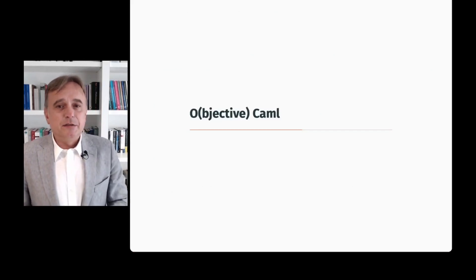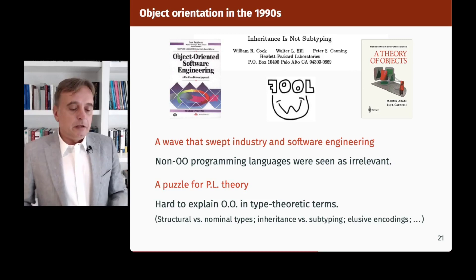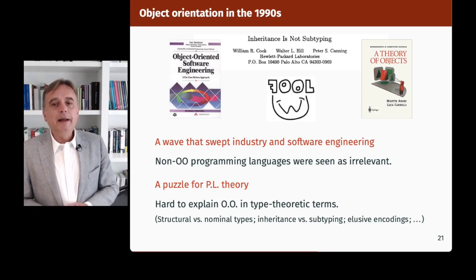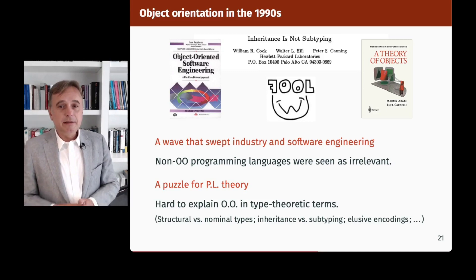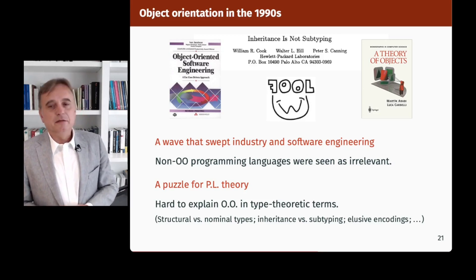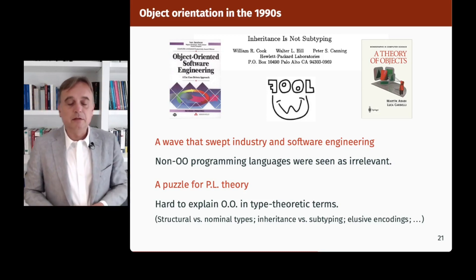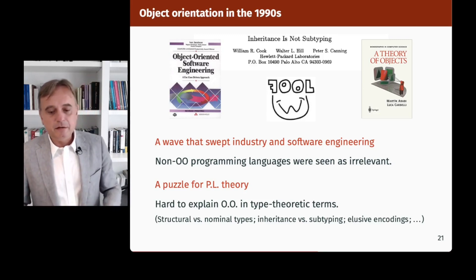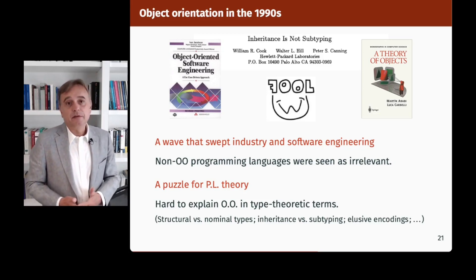This brings us to Objective Caml, which is essentially an extension of Caml Special Light with object-oriented features. I have to explain why objects. Object orientation was really a hot topic in the 1990s — a wave that swept industry and software engineering, with many new programming methodologies being developed around object and class decompositions. Industry had fallen in love with C++: 'This is a great language, we will never need any other.' So non-object-oriented programming languages were seen as basically irrelevant and things from the past.